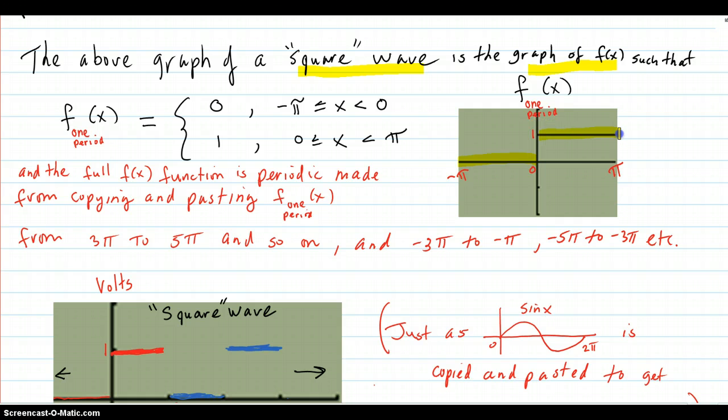So we're going to do our mathematics on this type of an interval from negative pi to pi. But it could be any kind of interval. It's just that the math works out easier on those. So the full f function is periodic and made from copying and pasting these one periods next to each other and before and on and on.